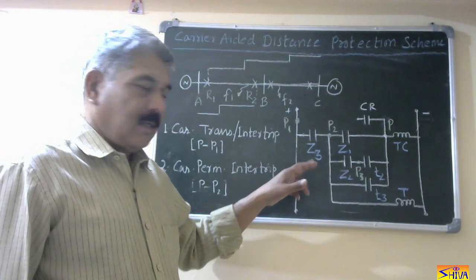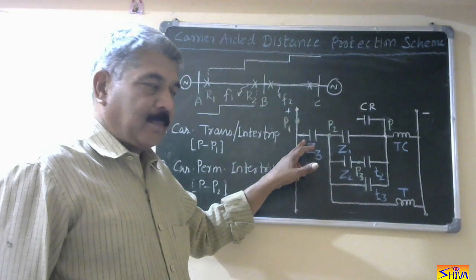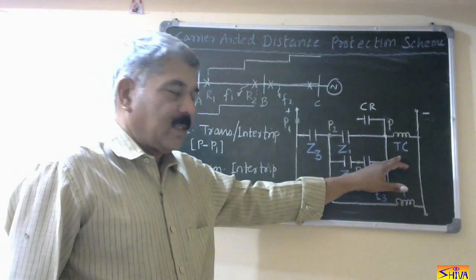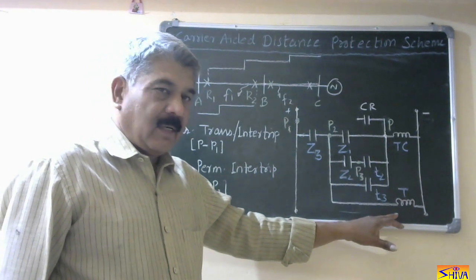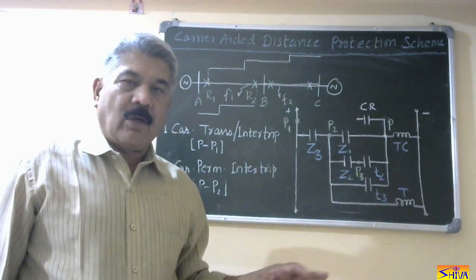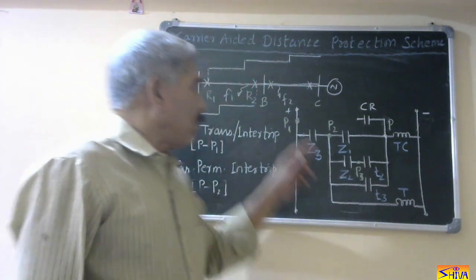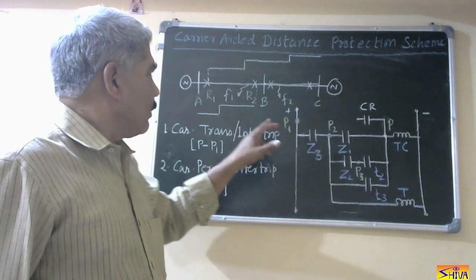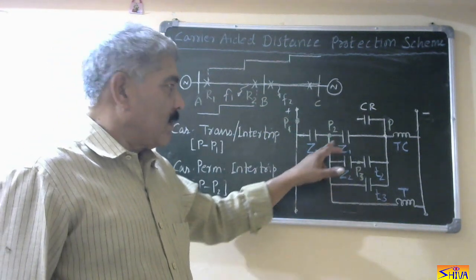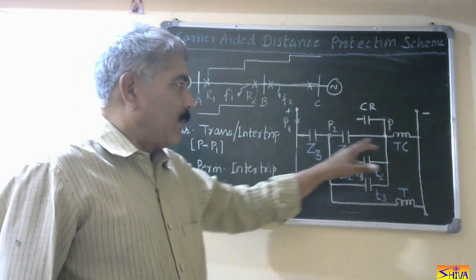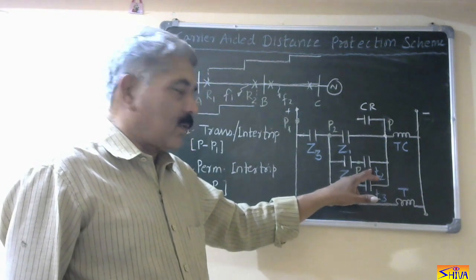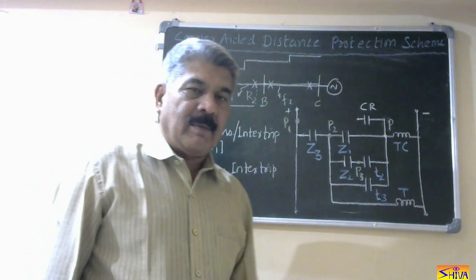I have already explained it, but let me revise. This is the contact of the third element Z3, first element Z1, and second element Z2. This is the trip coil of the circuit breaker. This is the timer coil — T2 and T3 — which are normally open contacts of the timer element. So for fault F1, which is in the second step, Z3 and Z2 will close while Z1 is open. So the trip coil will not be energized instantaneously; the timer circuit will be energized and after time T2, this contact will close and the trip coil of the circuit breaker will be energized.